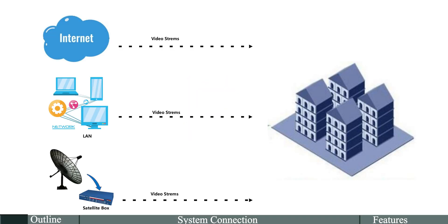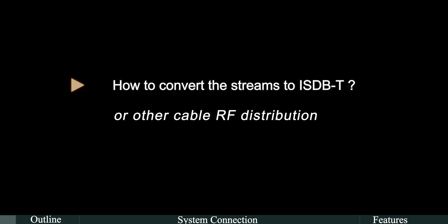When we have video streams from the internet, LAN, via cable or fiber, or using a satellite box to get IP streams, how do we convert the IP streams to ISDB-T or other cable RF distribution?